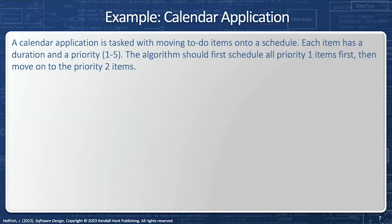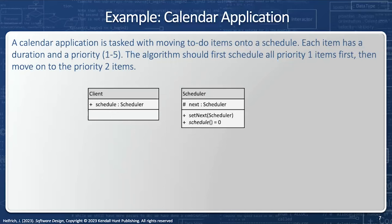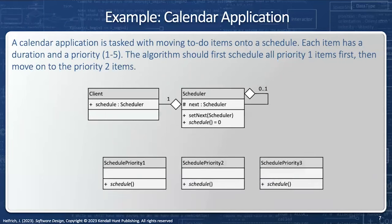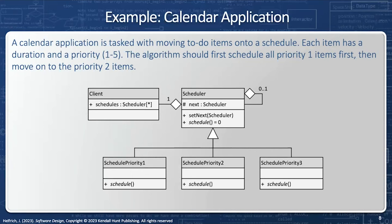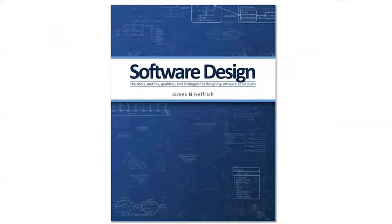Here's a second example: a calendar application tasked with moving to-do items onto a schedule. Each item has a duration and a priority one through five. The algorithm should first schedule all priority one items, then move on to priority two items, and so on. The client has a schedule and a scheduler that points to the next one. We have schedule priority one, schedule priority two, schedule priority three, and so on — all by inheritance. Priority one items are handled first, then anything left goes to priority two, then priority three, and if we're lucky, priority five things at the very end. We can also do this with the alternative implementation: instead of pointing to one, we point to many, and the scheduler removes its linked list. This is example 44.2 in the chain of responsibilities section of the message-passing chapter of the software design textbook.